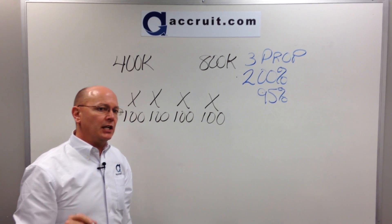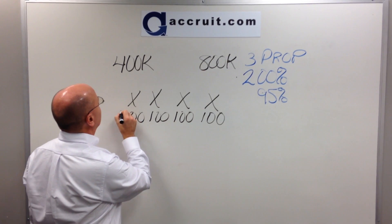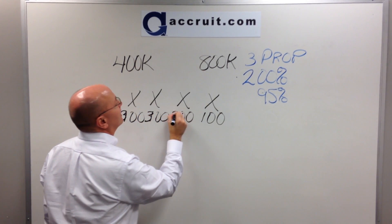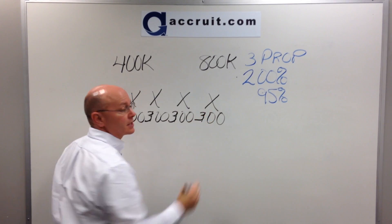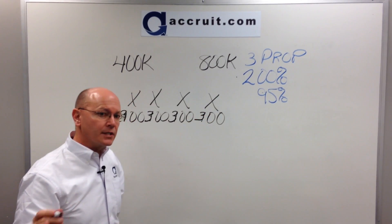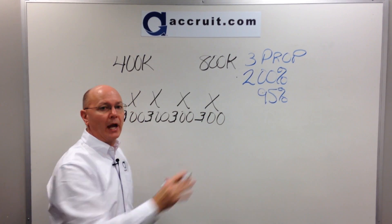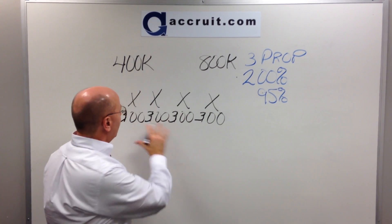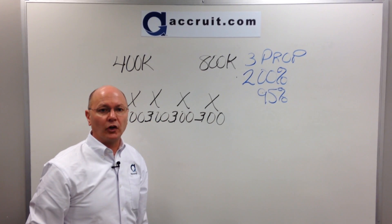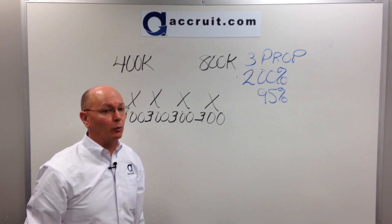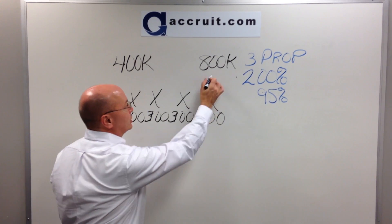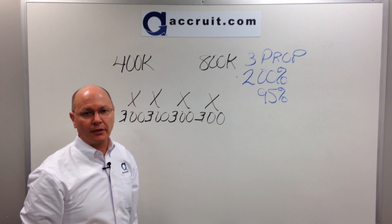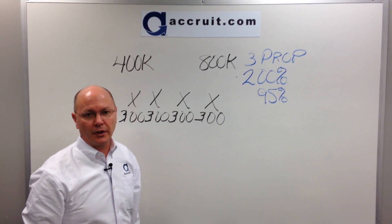But let's change the facts. Let's say that each one of these properties is valued at $300,000. You would still have to add up the value of everything identified, and in this case the total of all four adds up to $1.2 million, which is far in excess of the 200% threshold of $800,000.